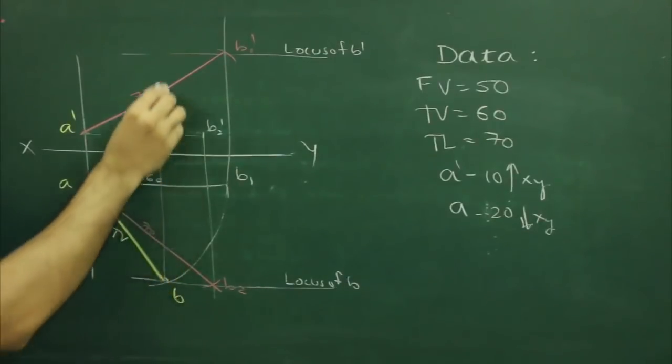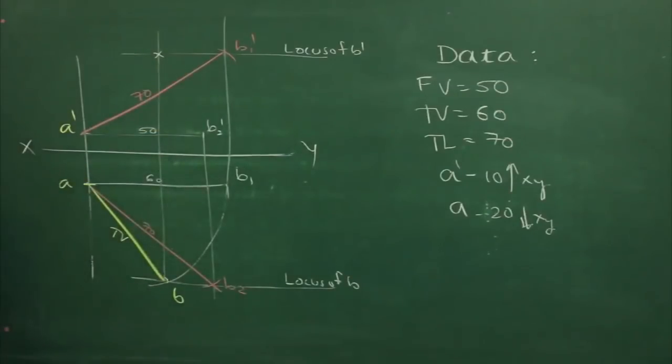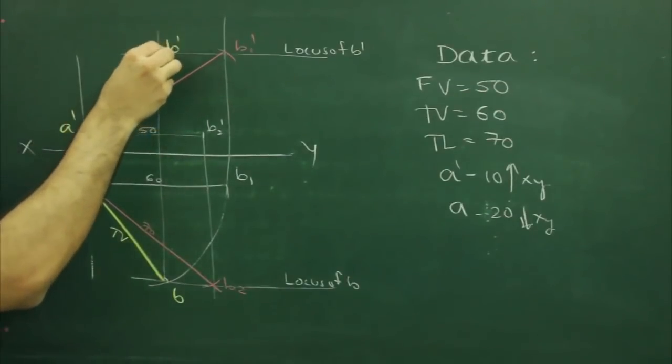Project b straight up, wherever locus of b intersects, that would be b dash.